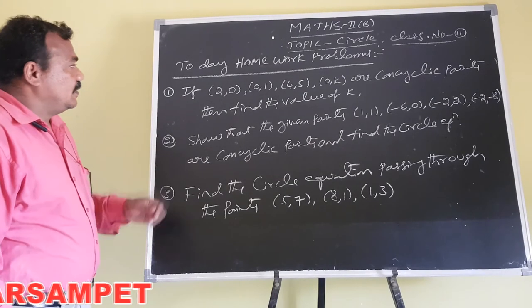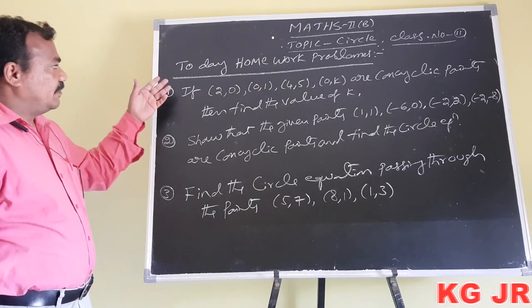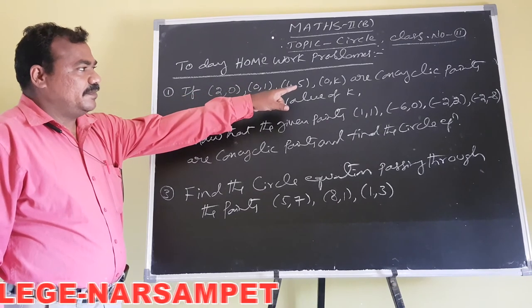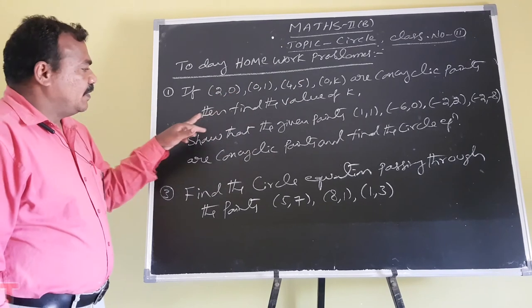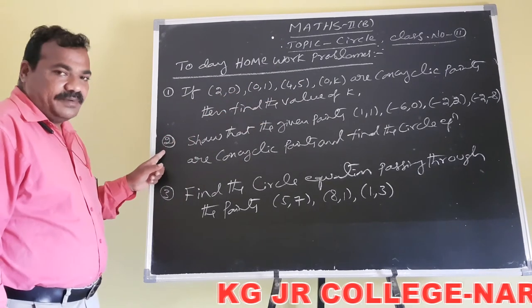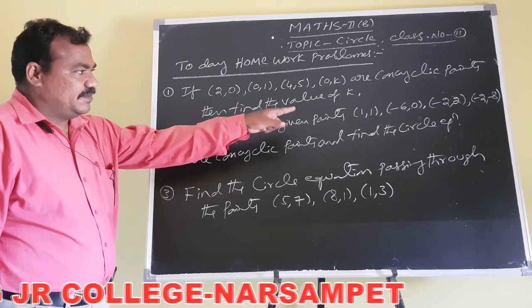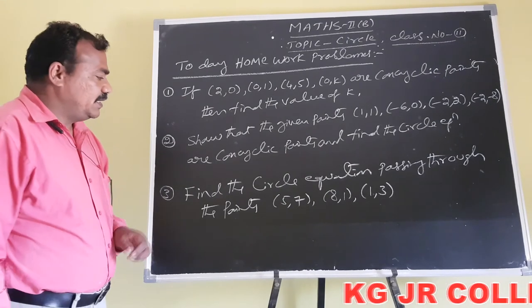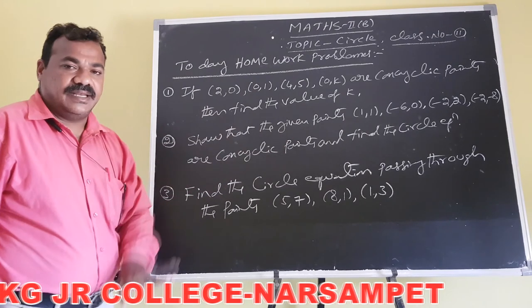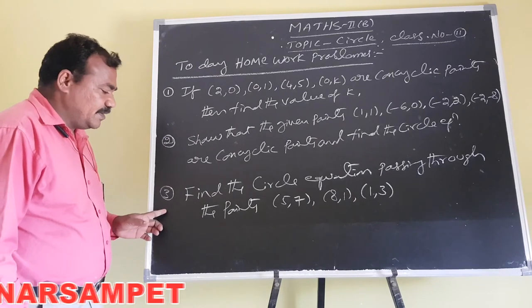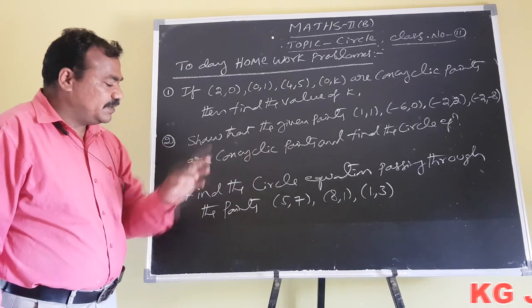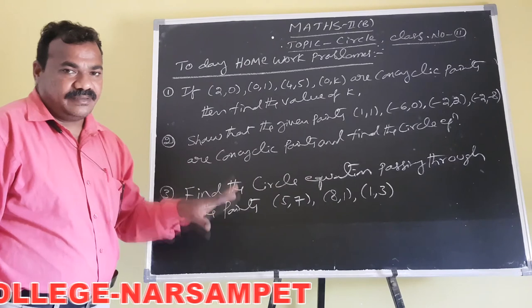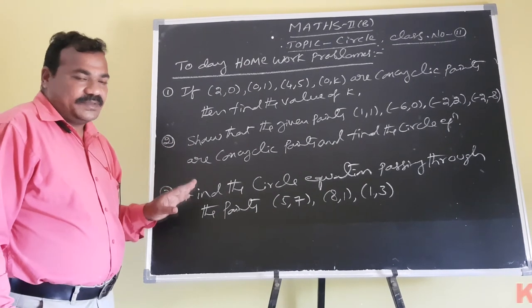Hello students. Here are the homework problems. First: if (2,0), (0,1), (4,5), (0,3) are concyclic points, find the value of k. Second: show that the points (1,1), (-6,0), (-2,2), (-2,-8) are concyclic and find the circle equation. Third: find the circle equation passing through the points (5,7), (8,1), and (1,8).